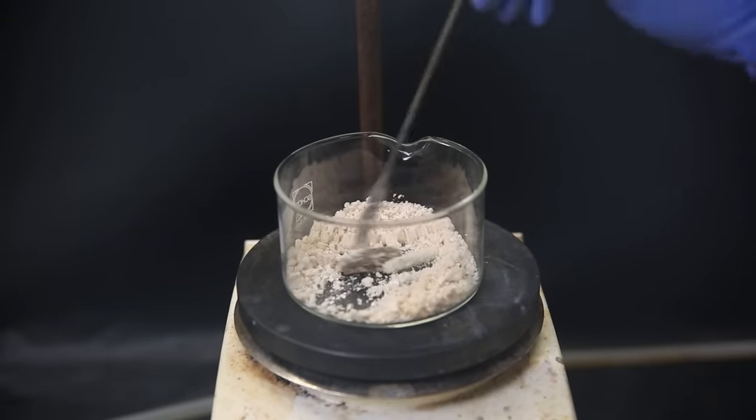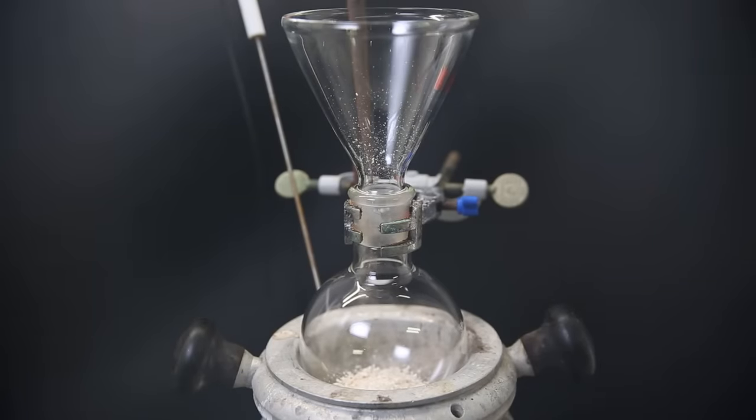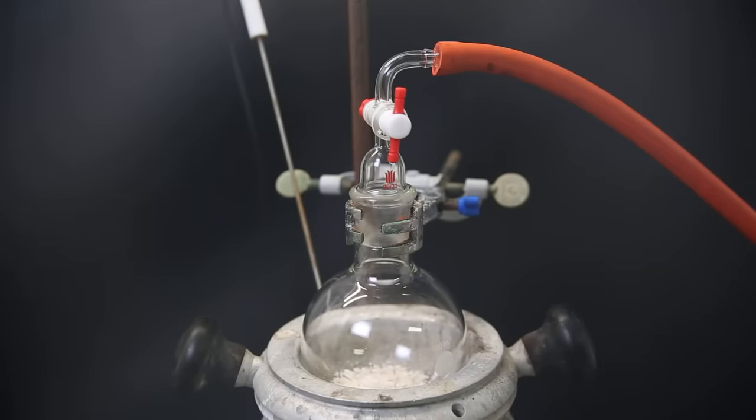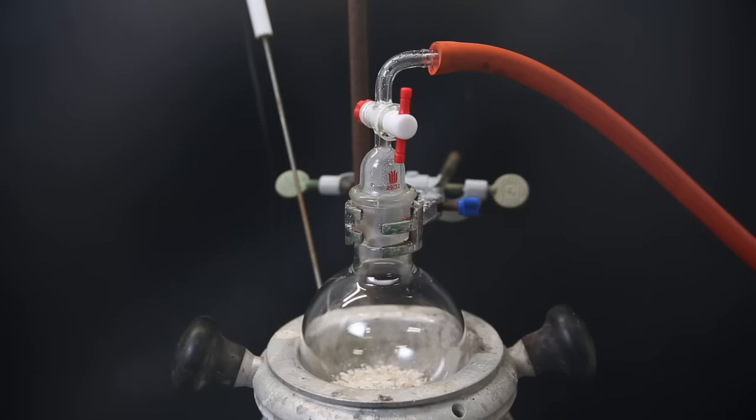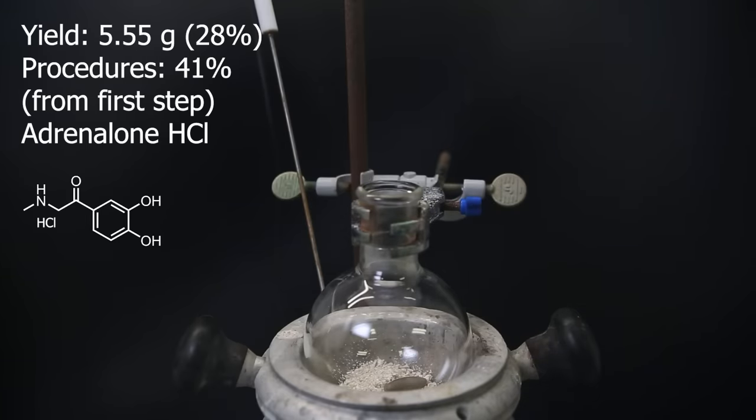Now this solid is still a bit wet and I want to know the yield, so I move it all to a flask. I then heat it to 60°C and pull a vacuum. I left it overnight and after that it should have pulled out all of the solvents. The yield of the dry adrenaline hydrochloride turned out to be 5.5 grams or 28%, which is lower than the combined yields of the procedures I was following, but that is pretty much expected.